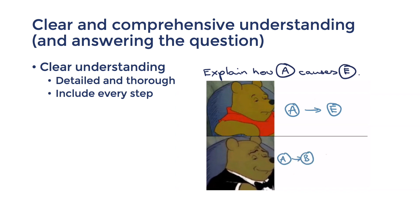But if you said A causes B to happen, which then leads to C and D, resulting in E, that is showing a clear understanding as you've thoroughly unpacked the link. So make sure your links and processes include every relevant step.